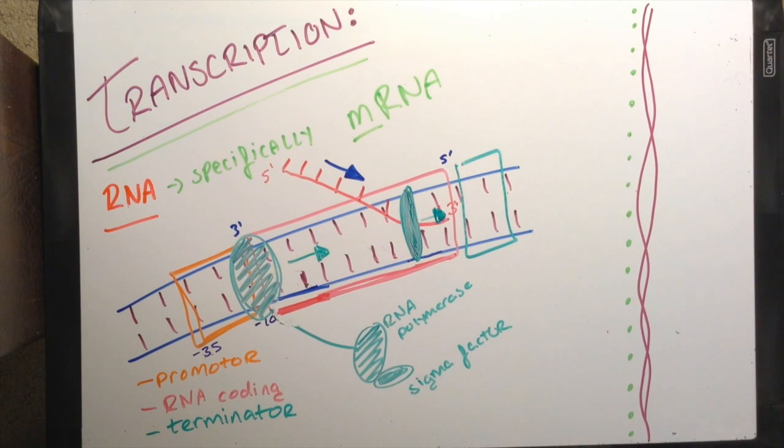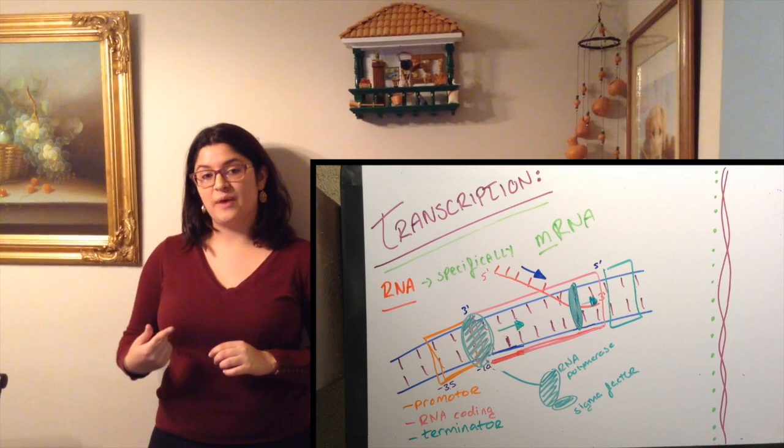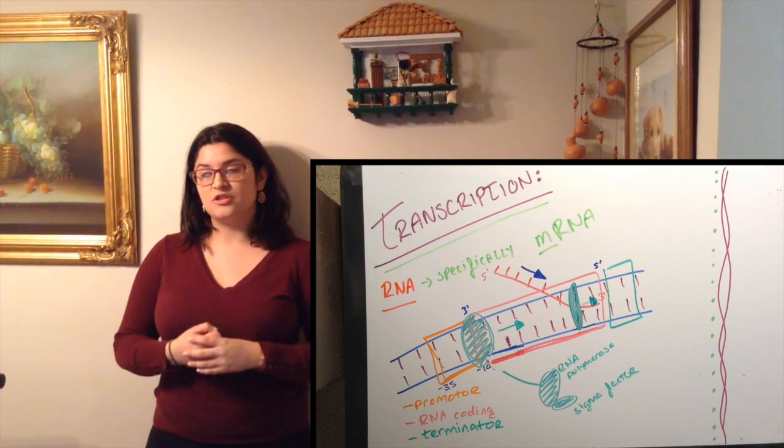It goes 5 prime to 3 prime, and initiation is over when the sigma factor falls away. Elongation continues the process. RNA polymerase moves down the DNA strand and the DNA is rewound up.